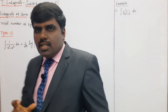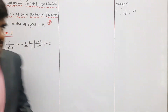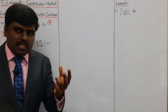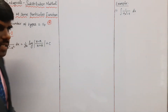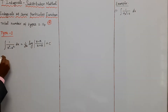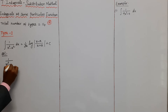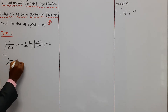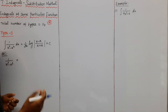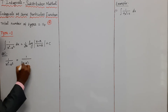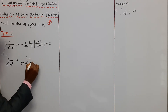Sometimes this proof is asked in board examinations. First, I will take 1 by (x² - a²). Using the difference of squares formula, this equals 1 by (x - a)(x + a).